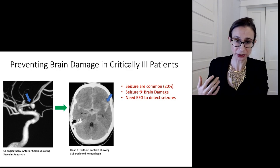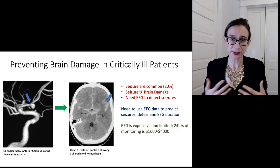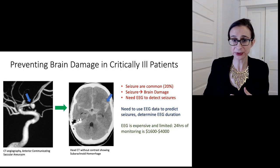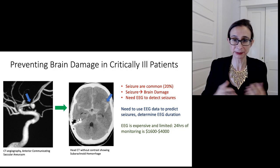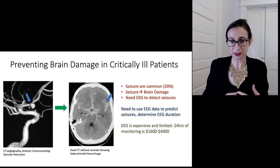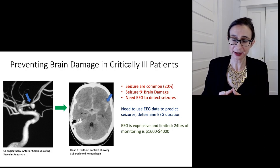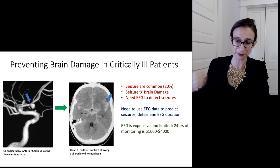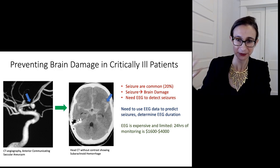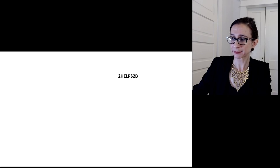The only way to detect these seizures is through EEG monitors. However, EEG monitors are a limited resource — there's not always enough doctors and monitors to go around. Monitors end up staying on people for too long who don't need them, meaning people who need them may not get them. It's really important to allocate these monitors carefully. So I've been working with neurologists for many years and we developed the 2HELPS2B score that predicts seizures from EEG monitors.